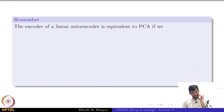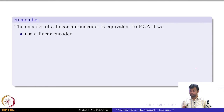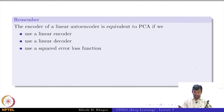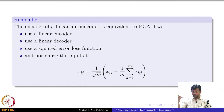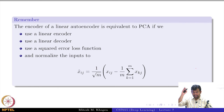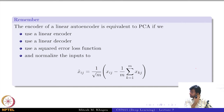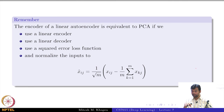What we have proved is that under these specific conditions — using a linear decoder, a squared error loss function, and normalized inputs — the encoder of a linear autoencoder is equivalent to PCA. Each condition was important: normalization gives us the covariance matrix, the squared error loss gives us the Frobenius norm objective, and the linear decoder ensures X minus HW is linear. Under all these conditions we have proved that the autoencoder is equivalent to PCA.